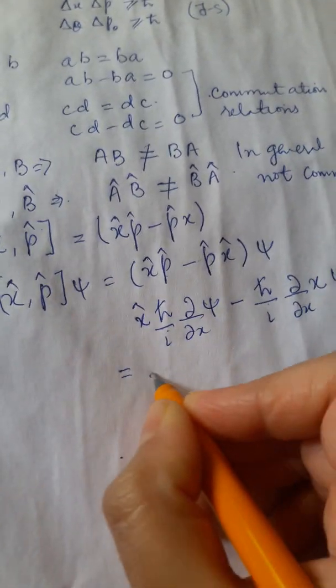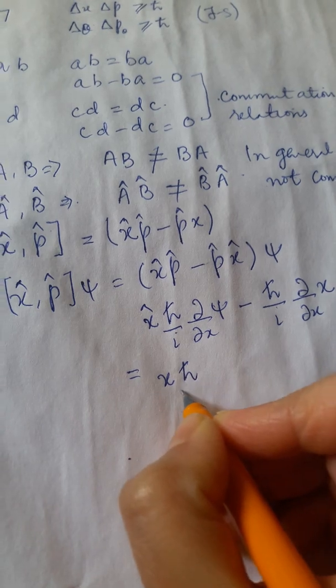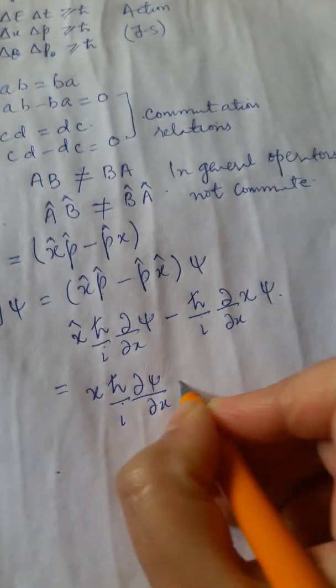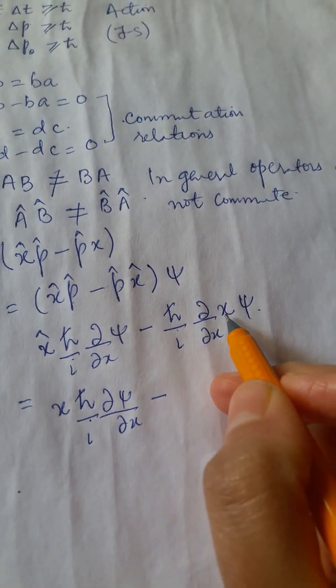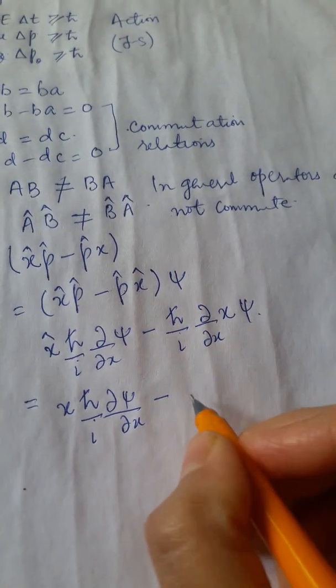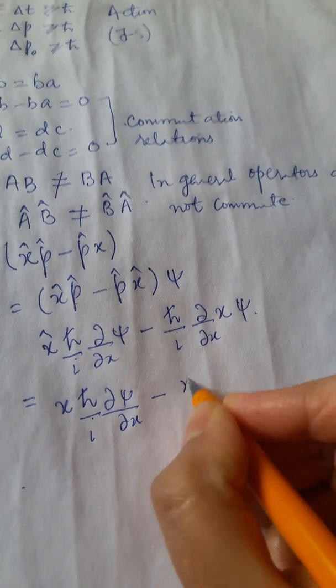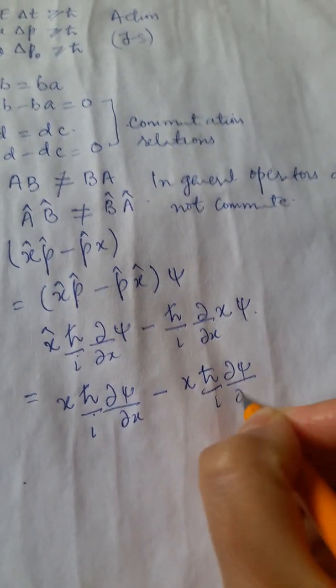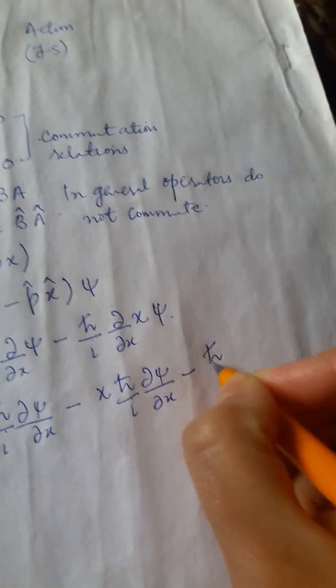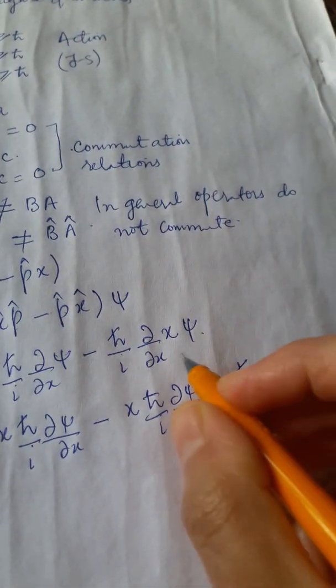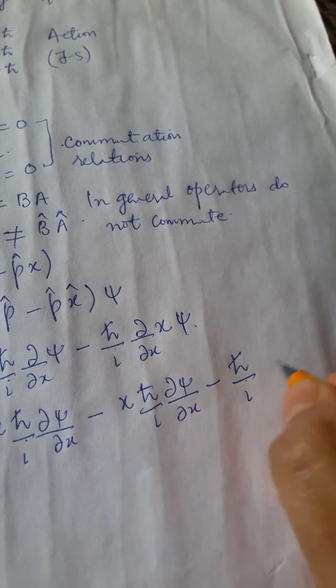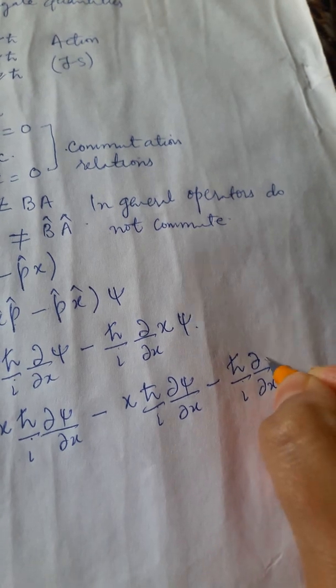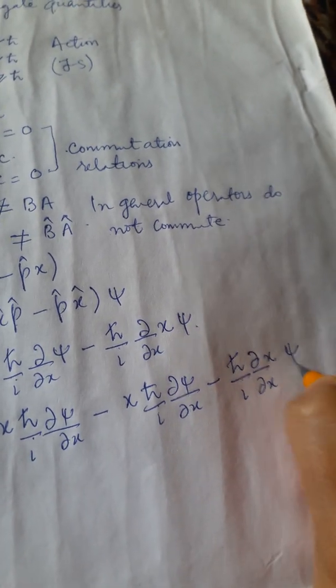Now, this is equal to x h cross by i d psi by dx minus this will split into two factors differentiation of this and then differentiation of this. So you have first function into differentiation of second plus second into d by dx of x and then you have this psi.